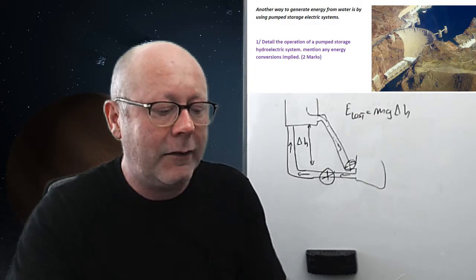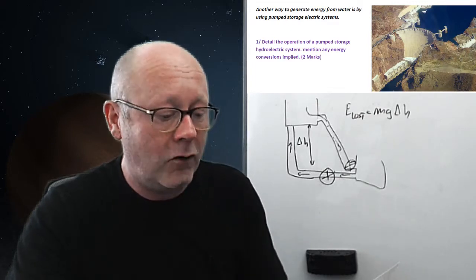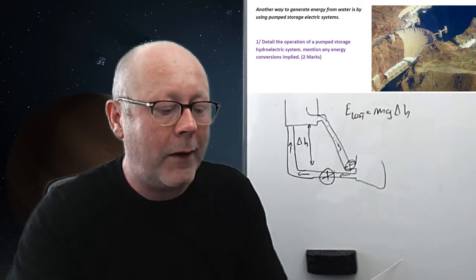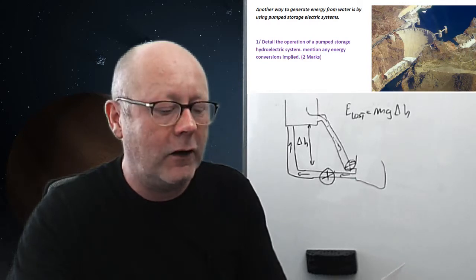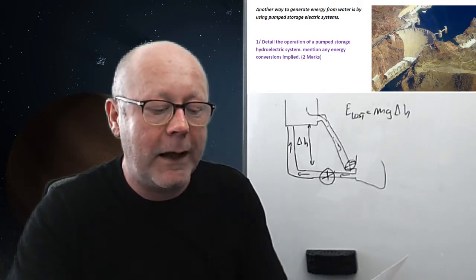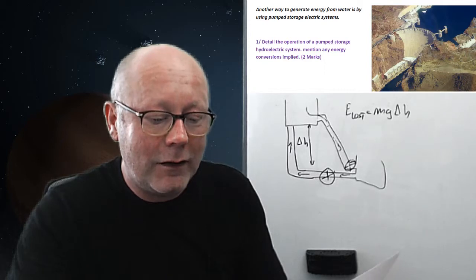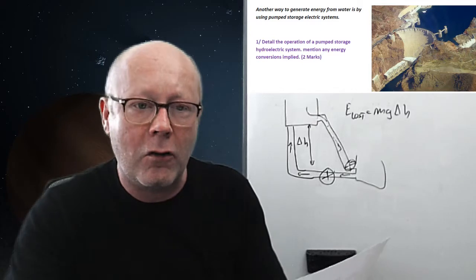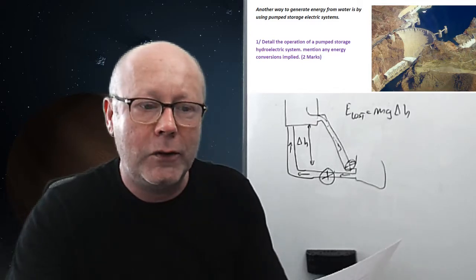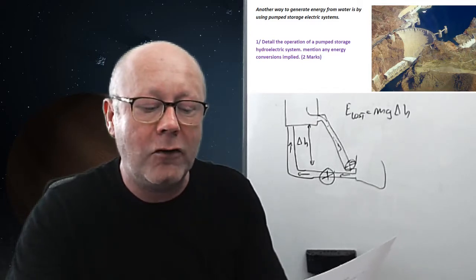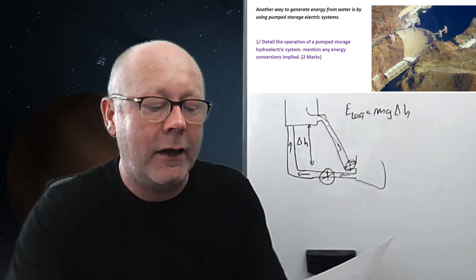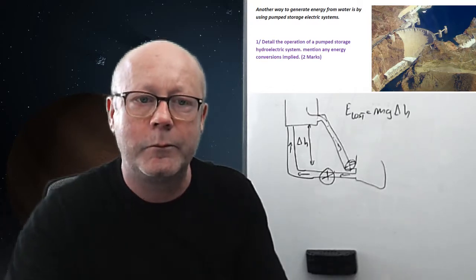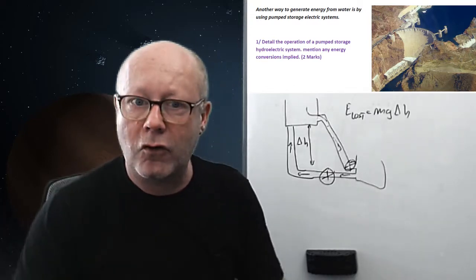So, for example, this is what I answered. Reservoirs are placed at different heights. When energy is cheap, the water is pumped up and gains gravitational potential energy. When it is expensive, it is let to flow in the low reservoir, passing through a turbine along the way. The gravitational potential energy is converted into rotational kinetic energy and then into electrical energy. So, that would be the two marks.